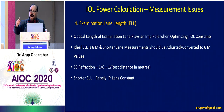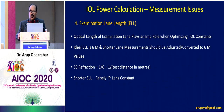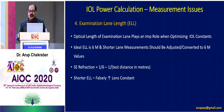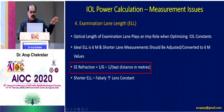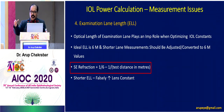Whenever we talk about the spherical target refraction — the spherical equivalent of a particular patient in the post-operative period — the optical examination lane length is very important. Most big centers and medical colleges will have 20 feet or 6 meters. But smaller centers in private practice may have a shorter lane. If it is less than 3 meters, we have to use this formula: whatever spherical equivalent refraction you get, add one divided by six minus one divided by the test distance in meters. That gives you the corrected refractive outcome, to be used to calculate the A constant.